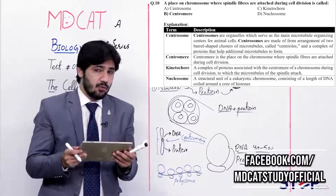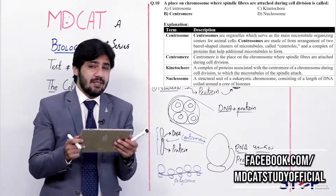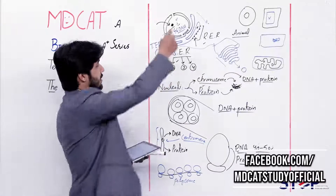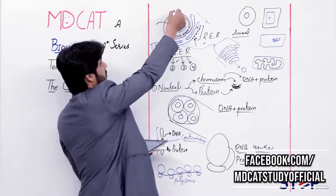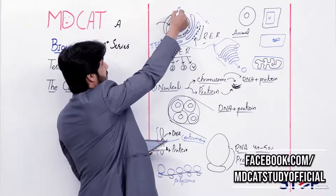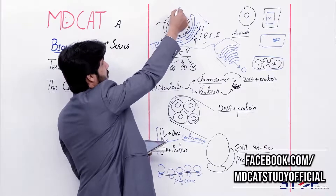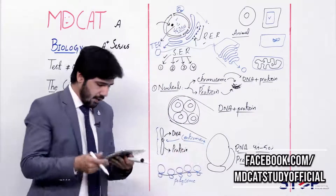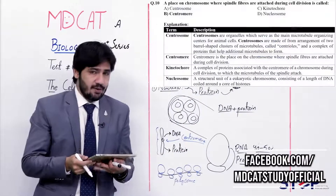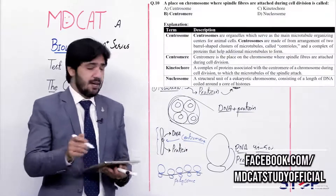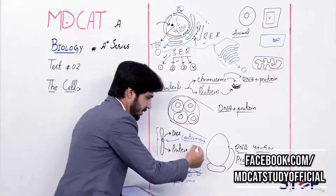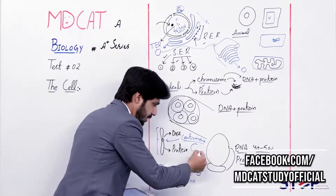The centromere is the region of the chromosome, and within the centromere, the attachment point involves a specialized protein called the kinetochore. But the region itself is called centromere, so the answer is beta. Alpha — centrosome — is the body in the cell where the centriole organelle exists, which is different from centromere.